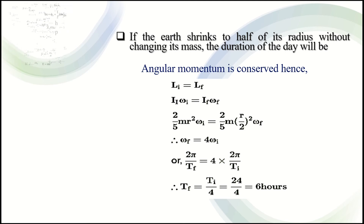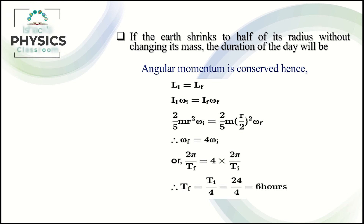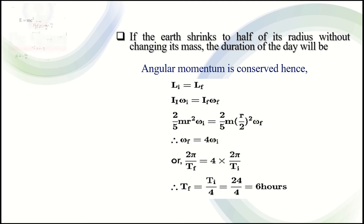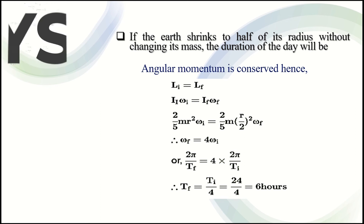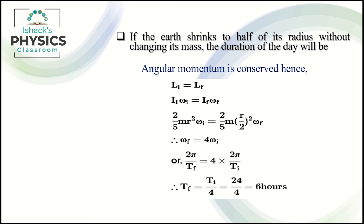Simplifying with R/2 squared, we get omega_i equal to (1/4) omega_F. Therefore, omega_F equals 4 times omega_i. Now we convert this to find the new period using angular frequency.